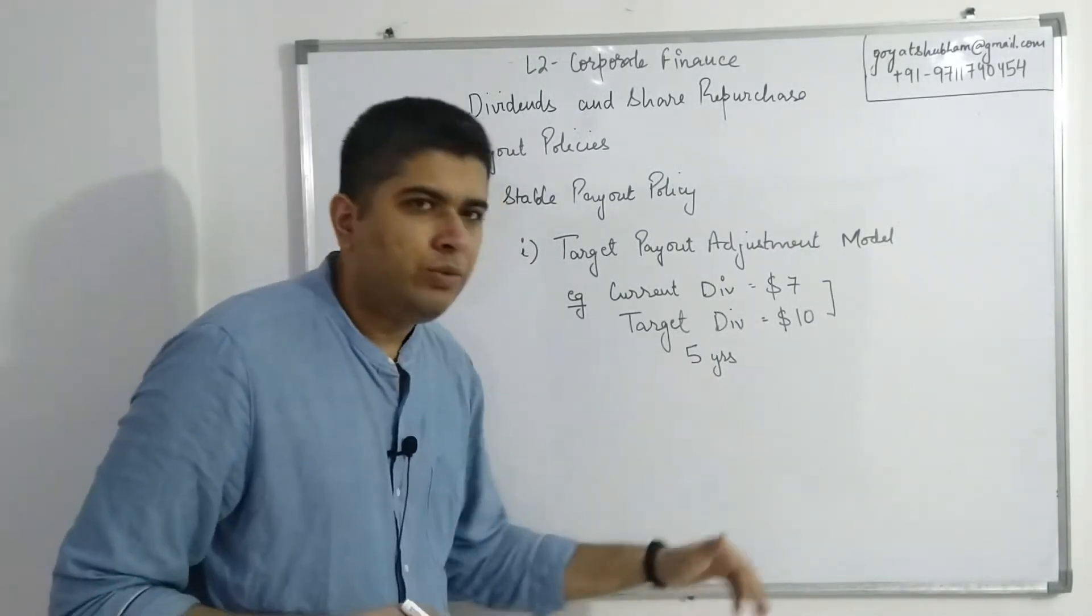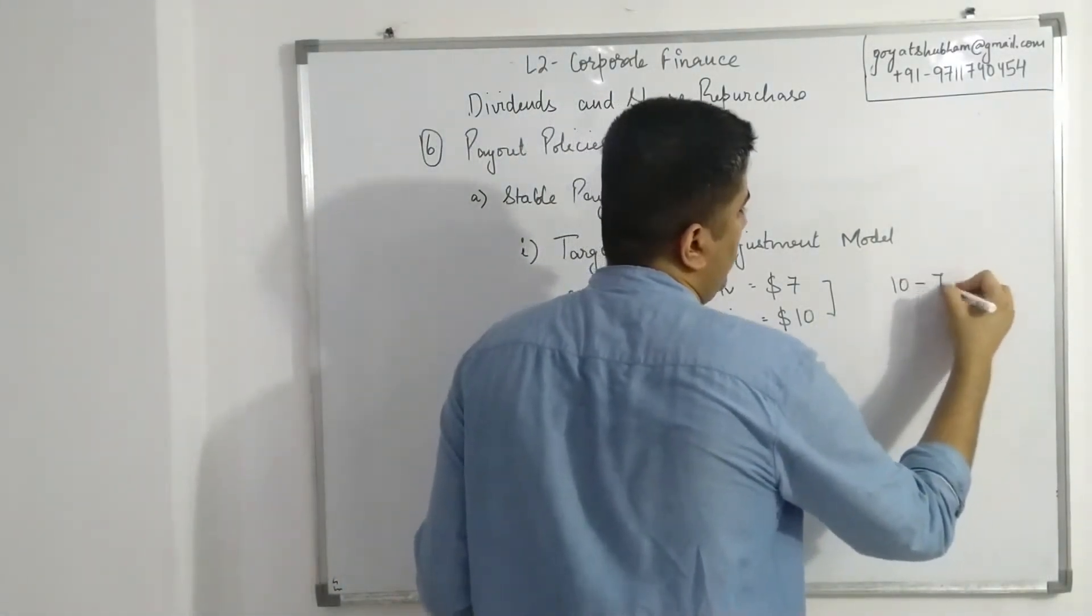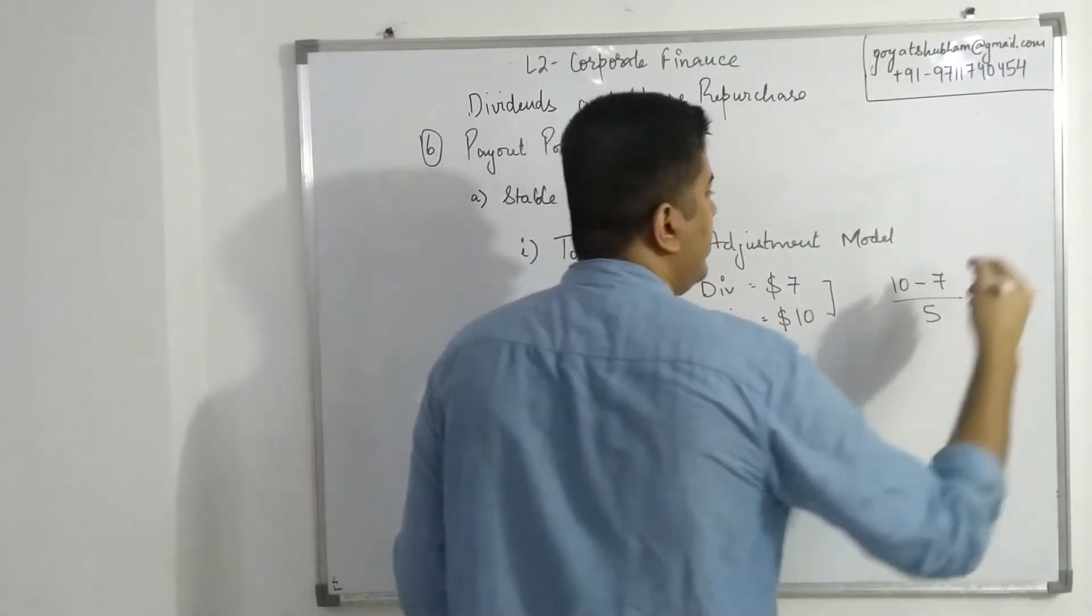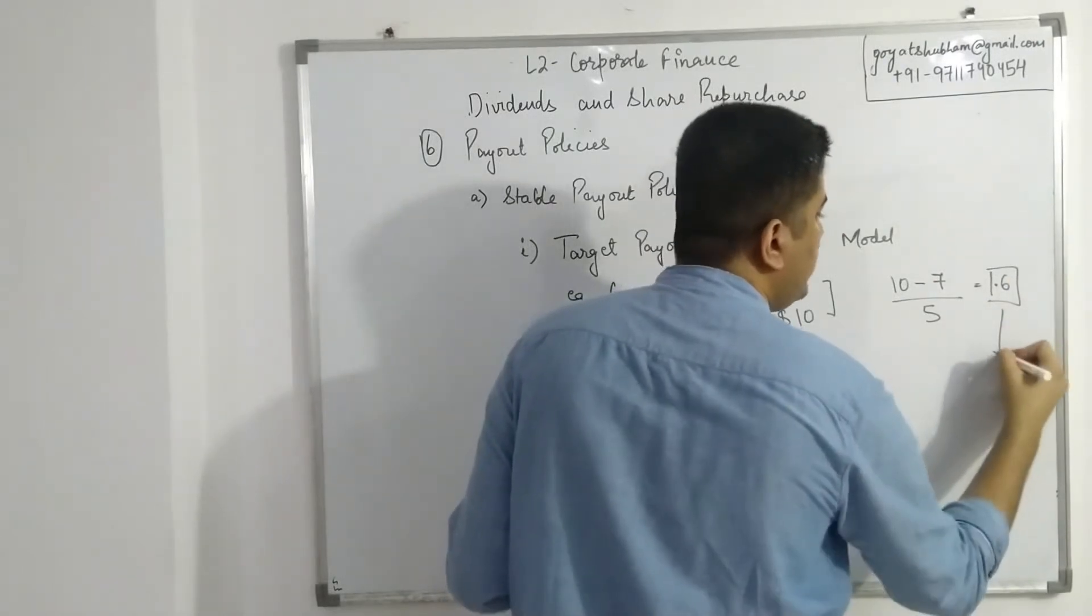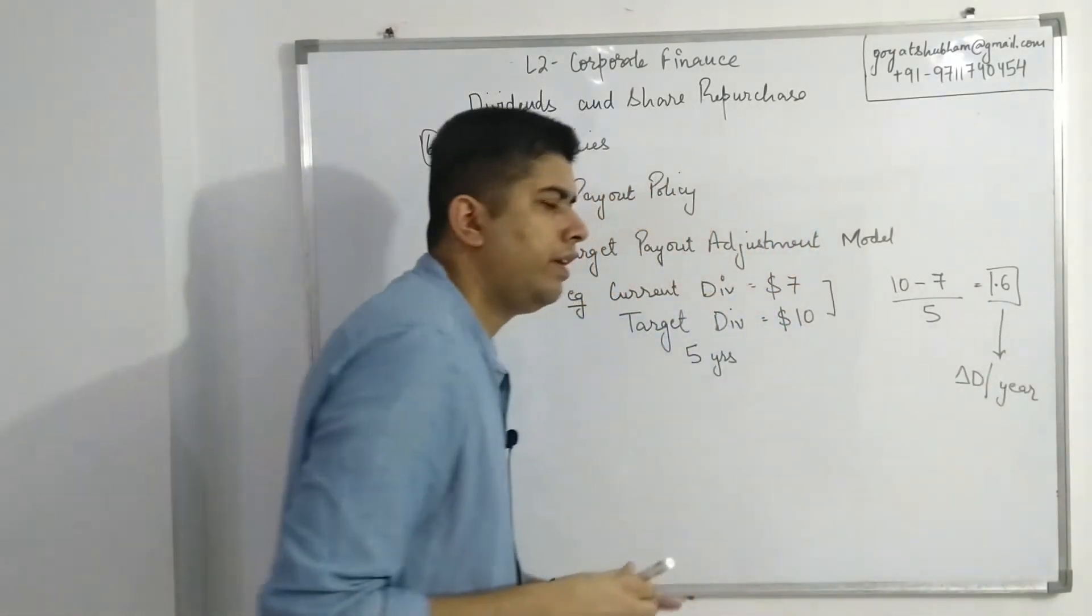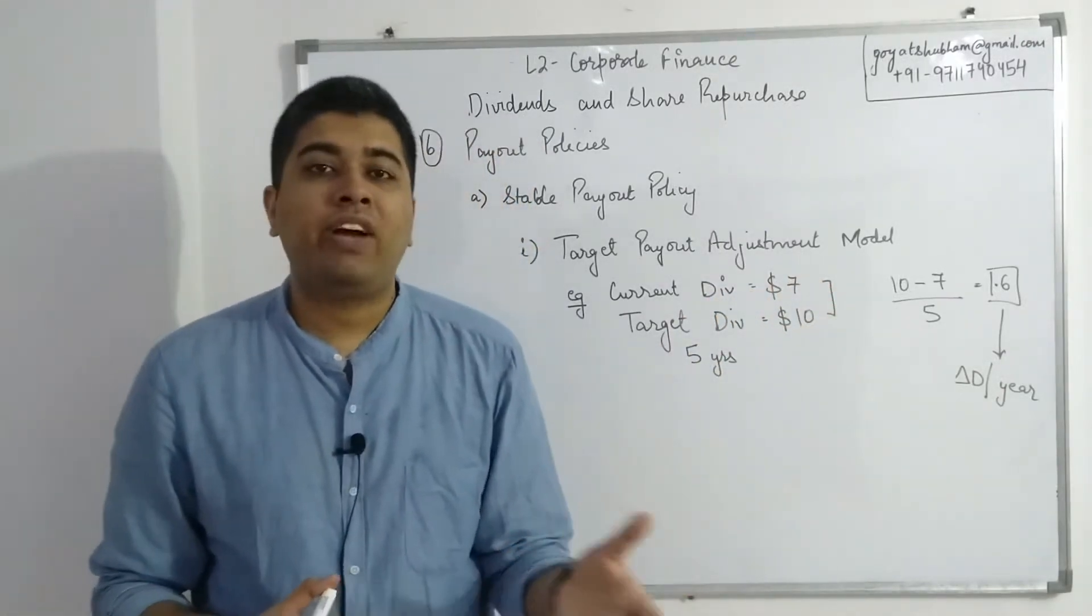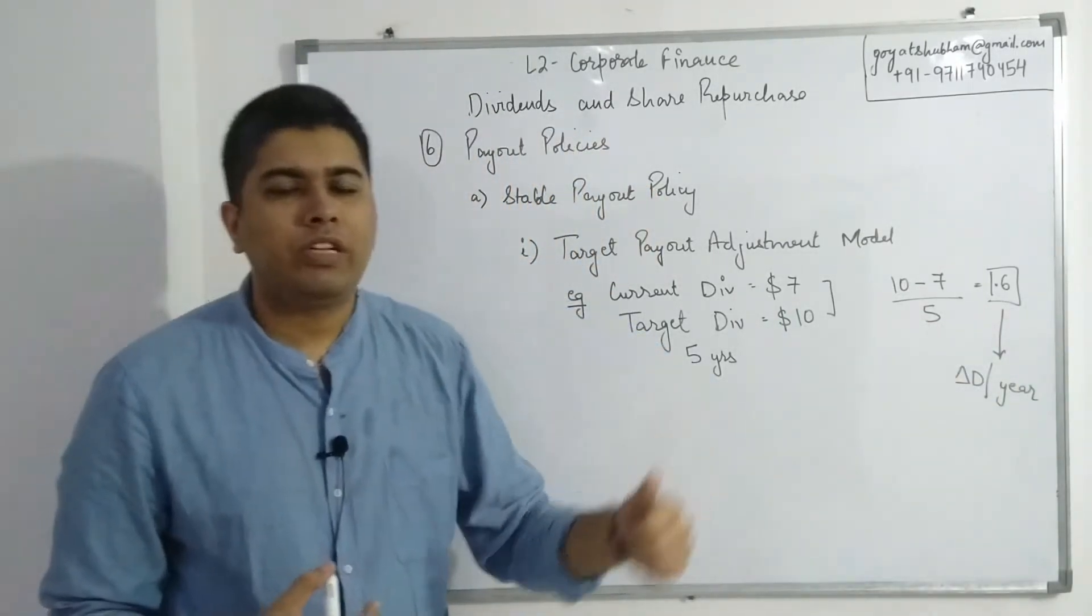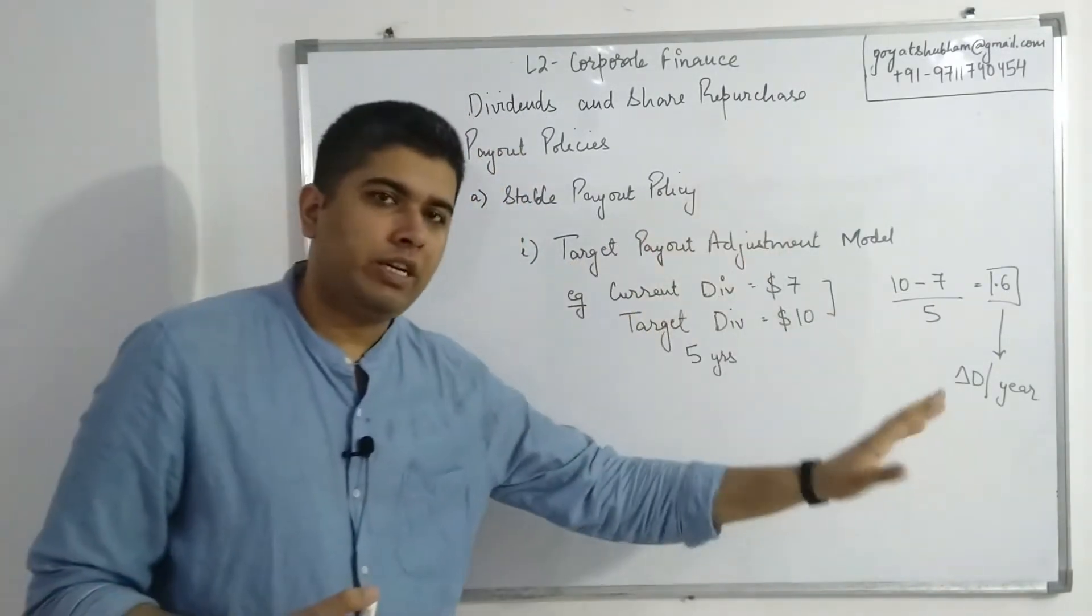Rather, what I want to do is gradually increase it over five years. So the basic calculation, the difference is 10 minus 7 divided by 5, or you can write it as multiplied by 1/5. This would give you 0.6. This 0.6 is the change in dividend per year. So if the company has currently a dividend of 7 and wants to reach a dividend of 10 over five years, it should increase its dividend by $0.6 every year. That would create a stable payout pathway to be followed for the next five years so they are able to achieve their target payout ratios.